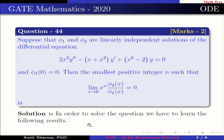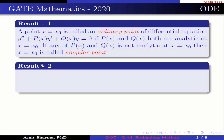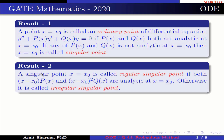In order to solve the question we have to learn the following results. Result 1: A point x = x₀ is called an ordinary point of the differential equation y'' + p(x)y' + q(x)y = 0 if p(x) and q(x) are both analytic at x = x₀. If any of p(x) or q(x) is not analytic at x = x₀, then x = x₀ is called a singular point. It is a regular singular point if both (x − x₀)p(x) and (x − x₀)²q(x) are analytic at x = x₀; otherwise it is an irregular singular point.